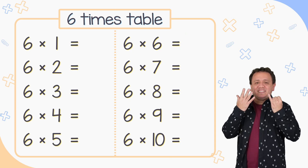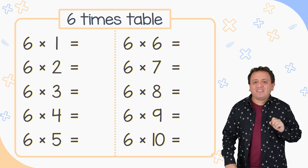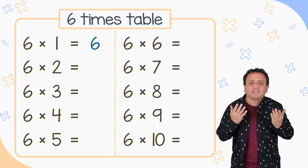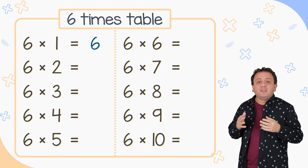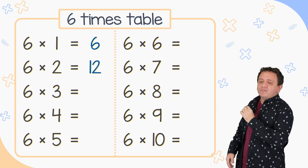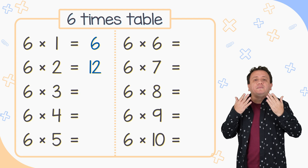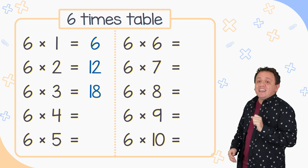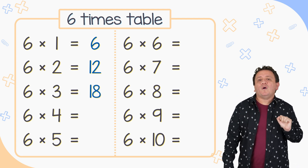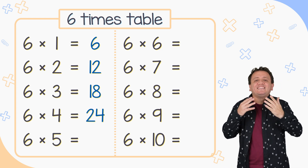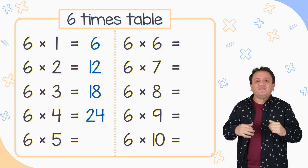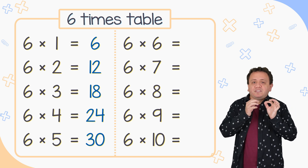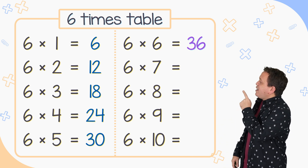Let's continue with the 6 times table. 6 times 1 equals 6. 6 times 2 equals 12. 6 times 3 equals 18. 6 times 4 equals 24. 6 times 5 equals 30. 6 times 6 equals 36.